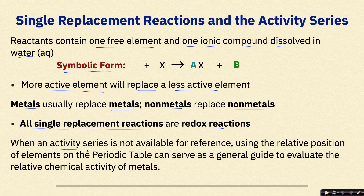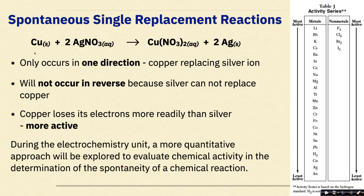When an activity series is not available, like in our AP class, the relative position of elements on the periodic table can serve as a general guide to evaluate relative chemical activity of metals. Group 1 and Group 2 metals are going to be your most active metals. Your transition metals are sort of middle of the road, and your metals that you can handle — like copper, silver, and gold — are going to be your least active metals.